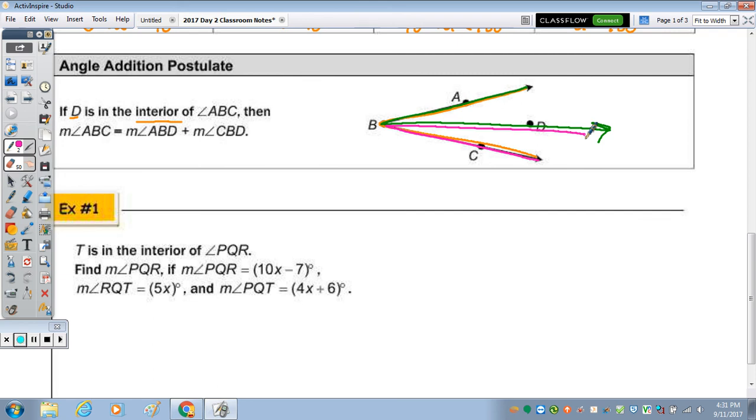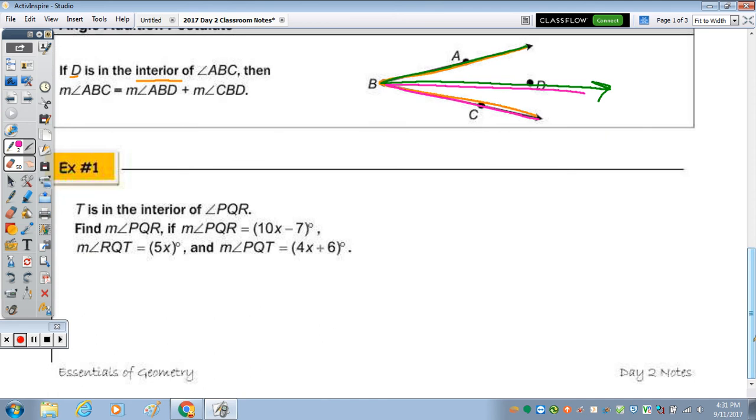So let's draw a picture in number one of the angle that's given. It says T is in the interior of PQR, so always draw the whole first. Same with a segment. So here would be P, Q is in the middle, that's the vertex. Here's PQR. This is find the measure of PQR. If the measure of PQR is 10X minus 7, so this angle from here to here is 10X minus 7 degrees.